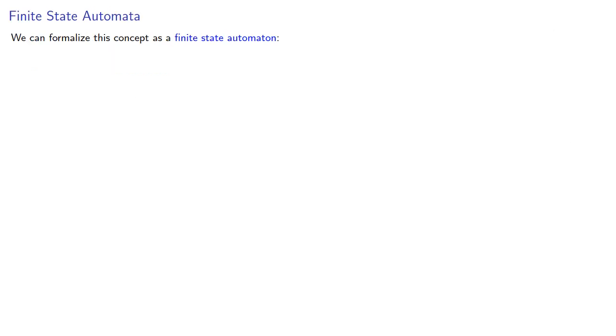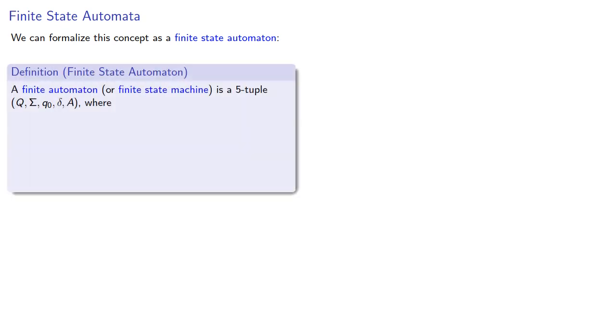We can formalize this concept as a finite state automaton. A finite state automaton, also known as a finite state machine, is a 5-tuple: Q, sigma, Q0, delta, A.